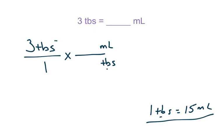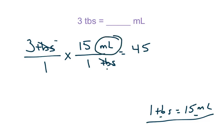I have tablespoons, and I know 1 tablespoon is 15 milliliters, so you put the 15 with the milliliters. Next, cancel units — tablespoons cancel, they go away. Multiply straight across the top: 3 times 15 is 45. Multiply straight across the bottom: 1 times 1 is 1, so you don't really need to do that part. Then write your final unit in the answer — that's the unit left over that you did not cancel out.